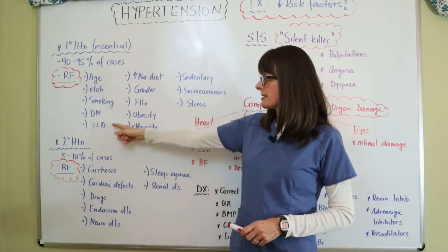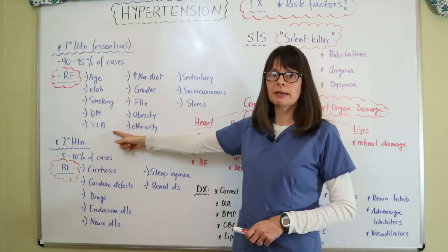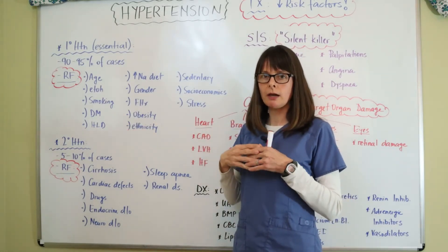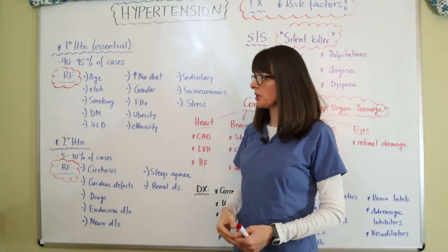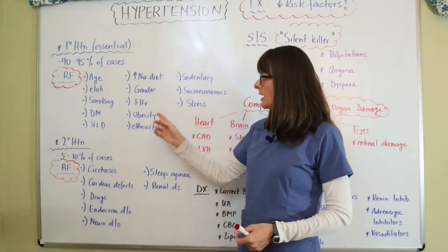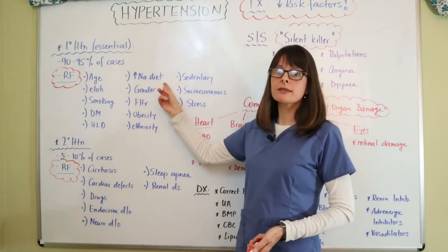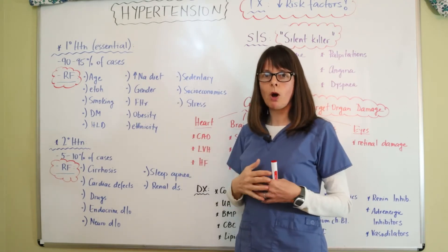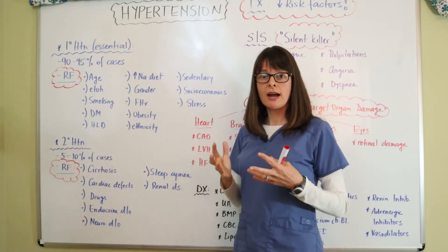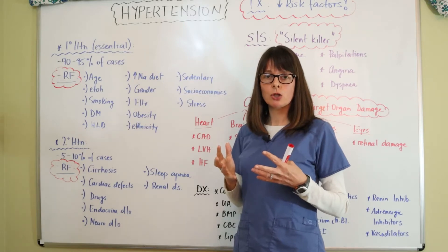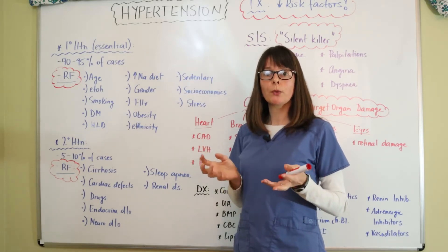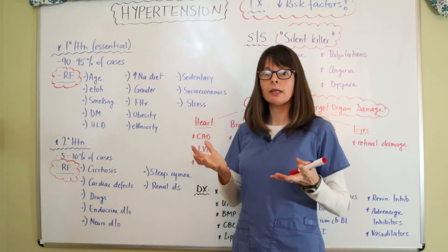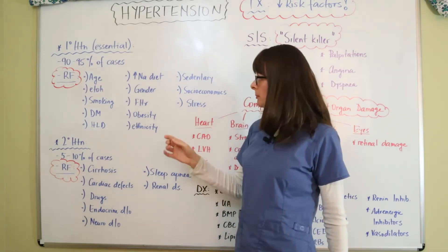Chronic diseases such as diabetes and hyperlipidemia are also risk factors for hypertension. An increase in sodium — a high sodium diet — is another risk factor because sodium and water go together. When there's high sodium content that the patient consumes, water will follow, so if there's more water in the system, it'll increase the blood pressure.